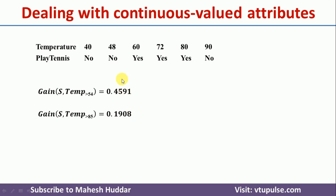So the information gain of the attribute with threshold 54 is 0.4591, and with threshold 85 it is 0.1908. Since 54 has the maximum information gain, 54 is the best threshold or boundary. Therefore, the continuous valued attribute temperature can be divided into two classes: less than 54 and greater than 54. Previously we had six possible values; now we have only two groups.